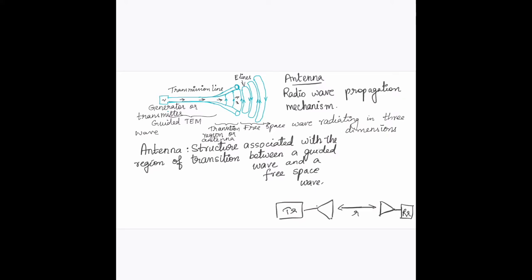A radio antenna is defined as the structure associated with the region of transition between a guided wave and a free space wave, or vice versa, depending on whether it is a transmitting or receiving antenna. The transmission line guides the radio frequency waves, where energy is guided as a plane wave with little loss because the spacing between the two lines is very small. As the separation approaches a wavelength or more, the wave tends to radiate outward and becomes spherically expanding, so that area acts like an antenna.